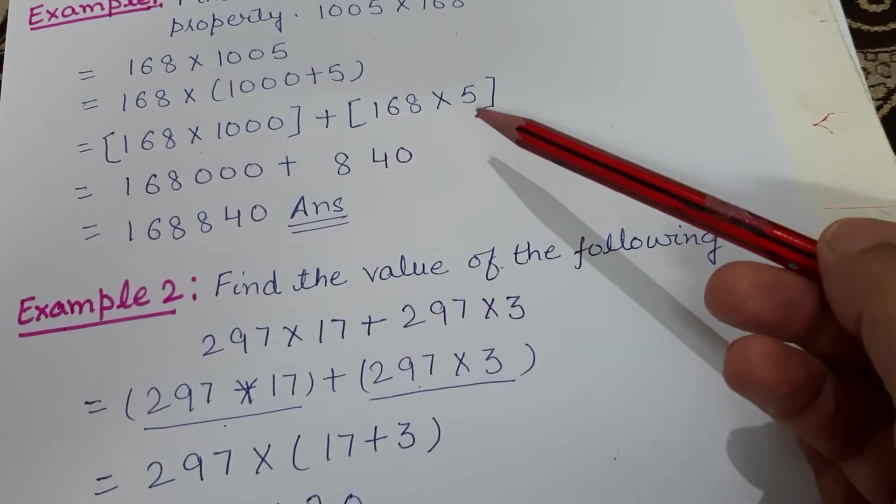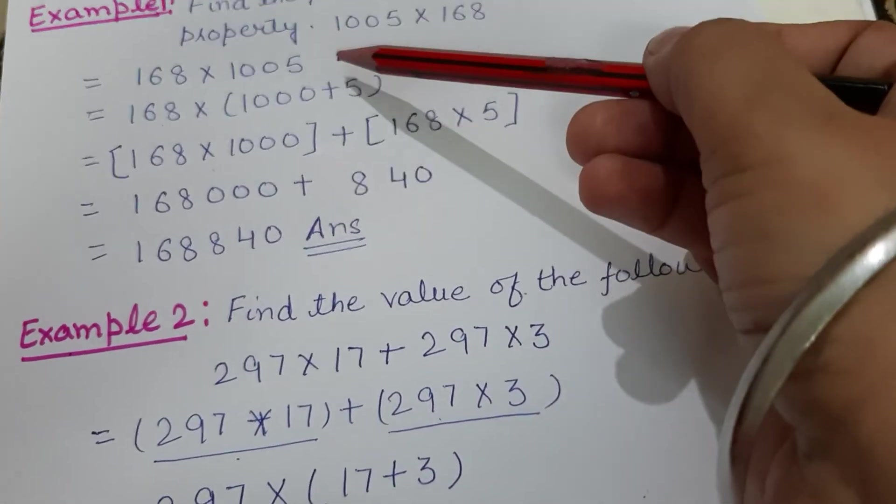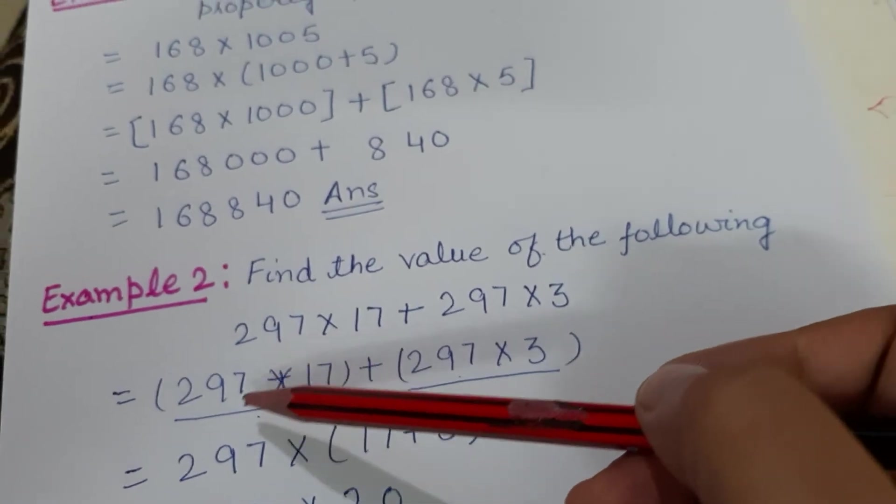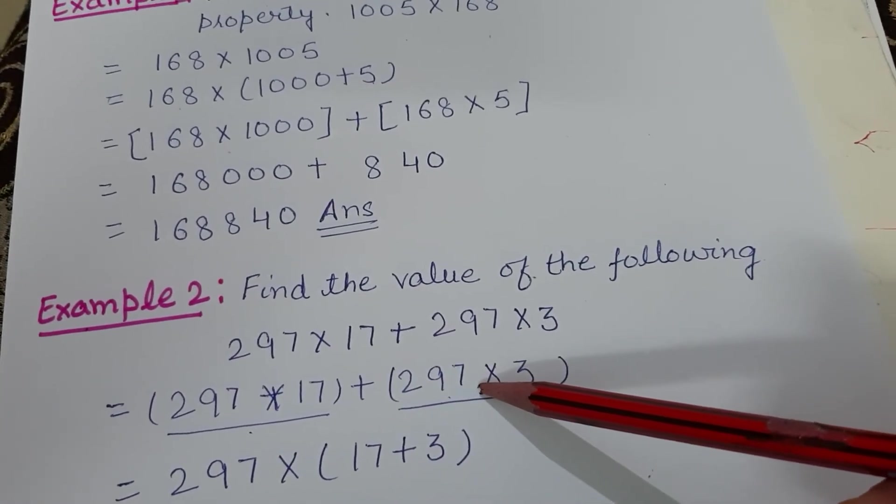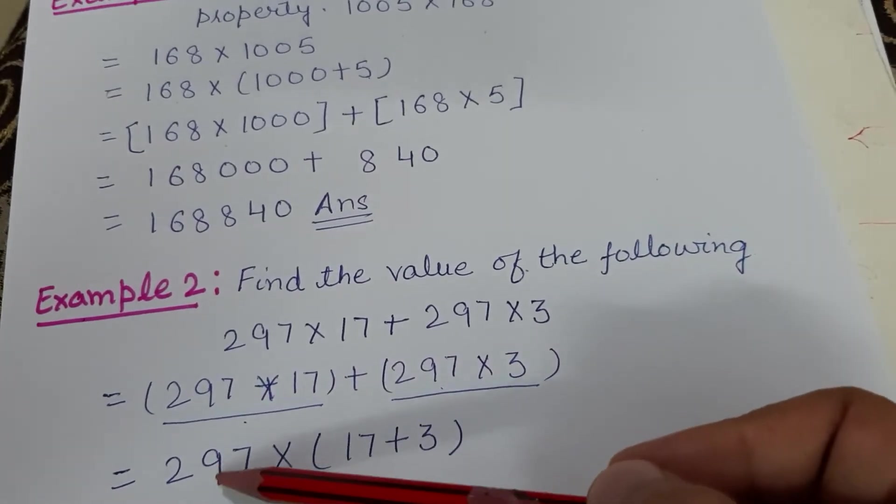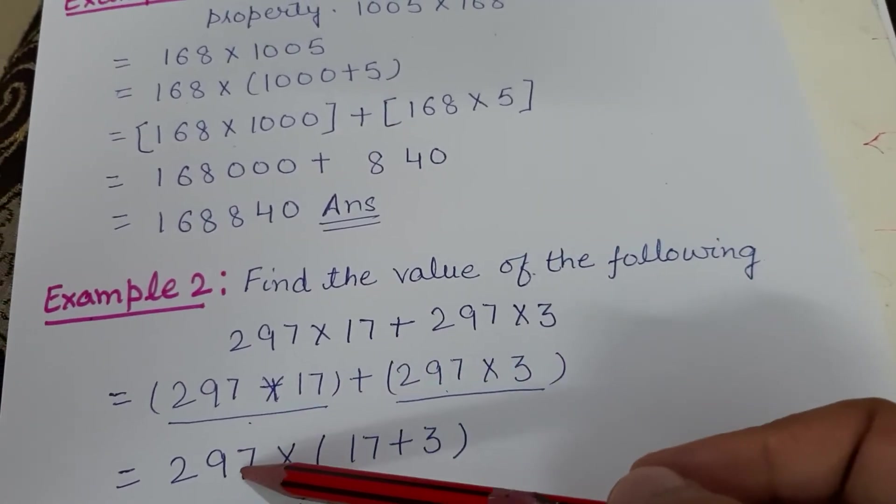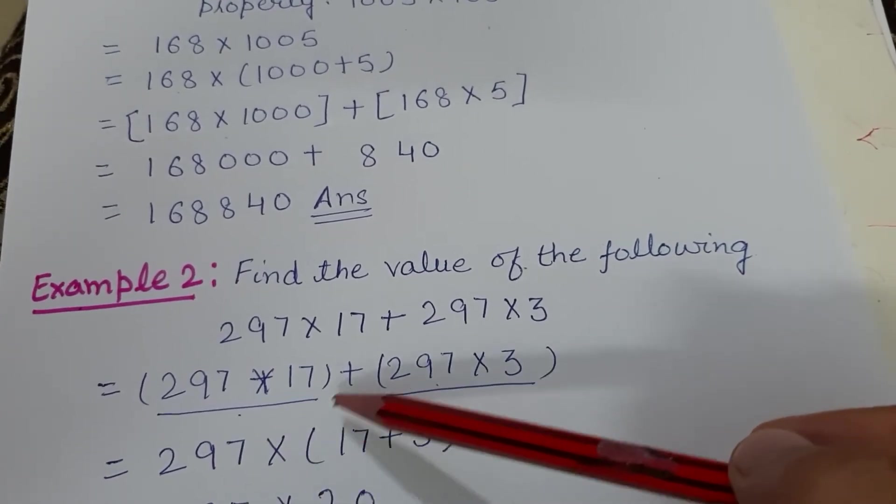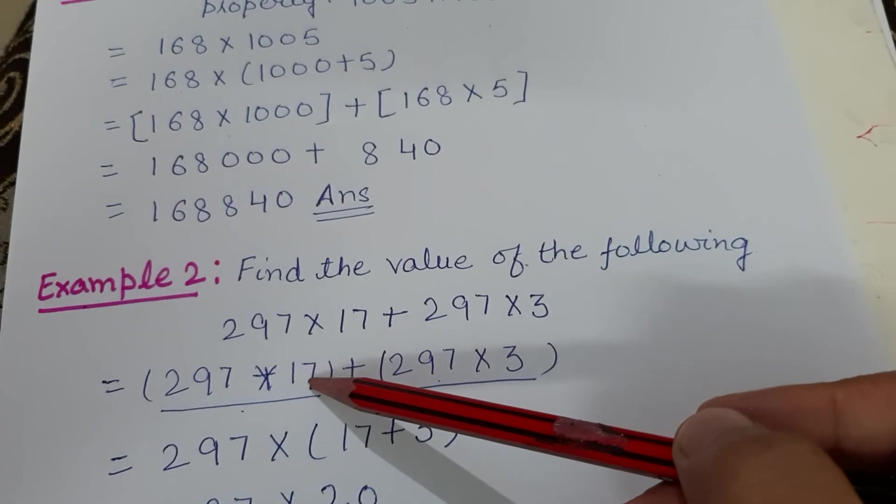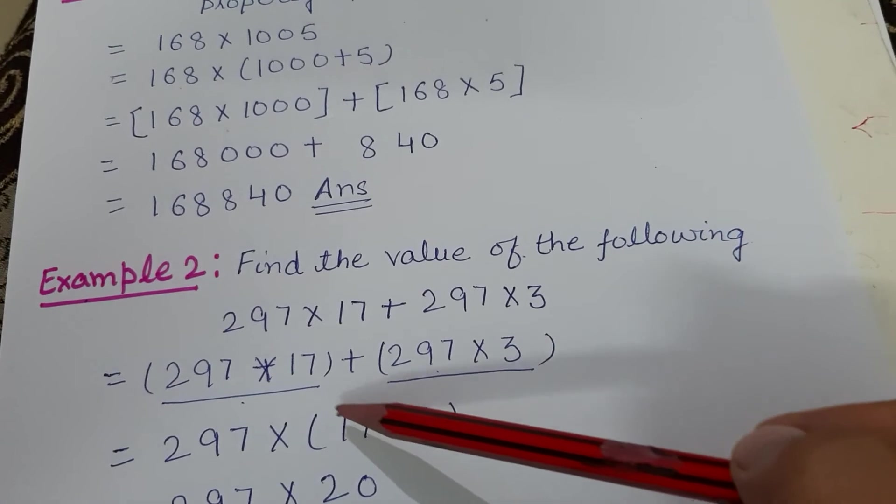Now you will move backward. After this, if you see 297 in both terms, I can take it common. If it is present in both, I can write it once.